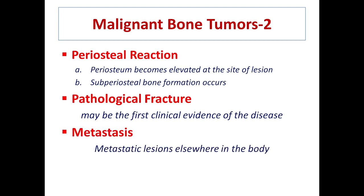Metastatic lesions may be found in other parts of the body because in metastasis, tumor cells can enter the blood supply and travel elsewhere. They often reside in the lungs and form nodules which can be seen radiographically. In malignant tumors, chest X-rays should be taken to check the stage of the cancer — whether it has spread in the body or remains confined.